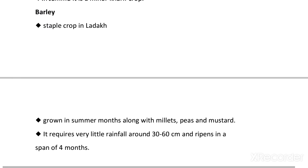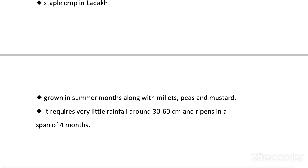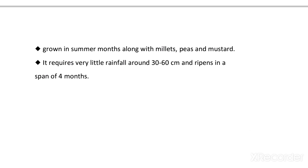Barley is the staple crop of Ladakh and grows in summer months along with millet, peas, and mustard. Barley cultivation requires very little rainfall, around 30 to 60 centimeters, and it ripens in a span of four months. So this is all about the crop pattern of Jammu and Kashmir. Thanks for listening.